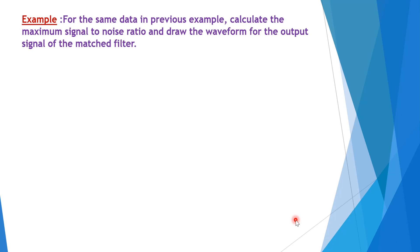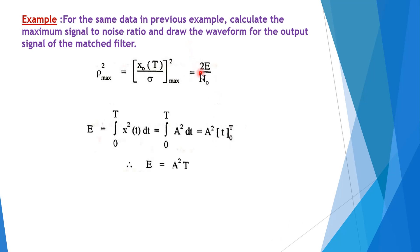Now, using the same previous example, we calculate the maximum signal to noise ratio and draw the output waveform. The output Y(T) is x(T) convolved with H(T). The SNR is 2E/N0, but we do not yet know the energy E, so we need to calculate it first.